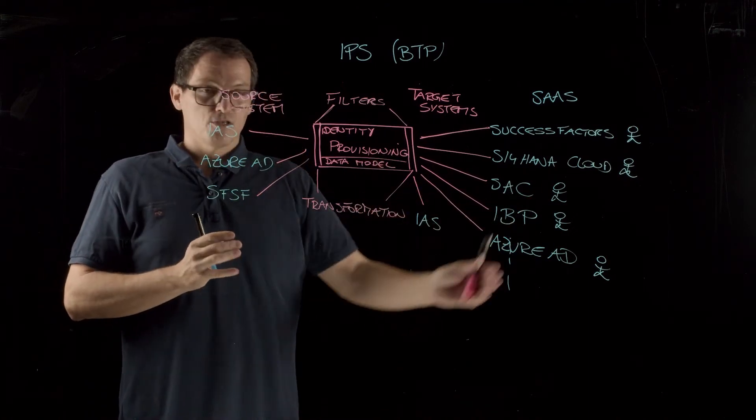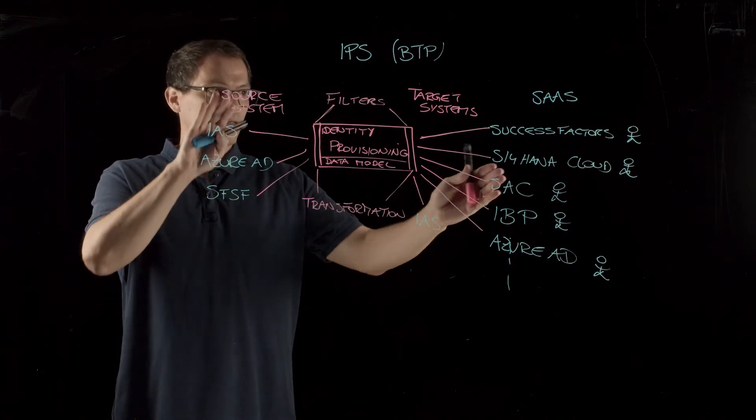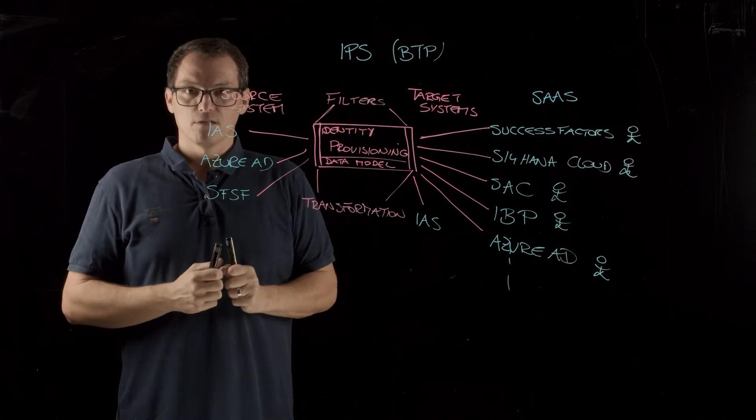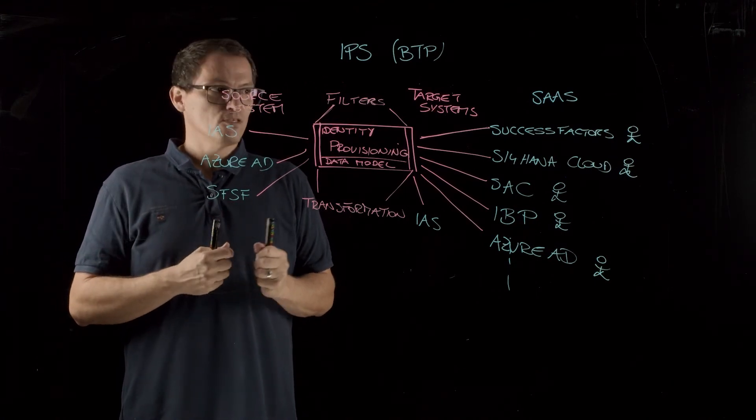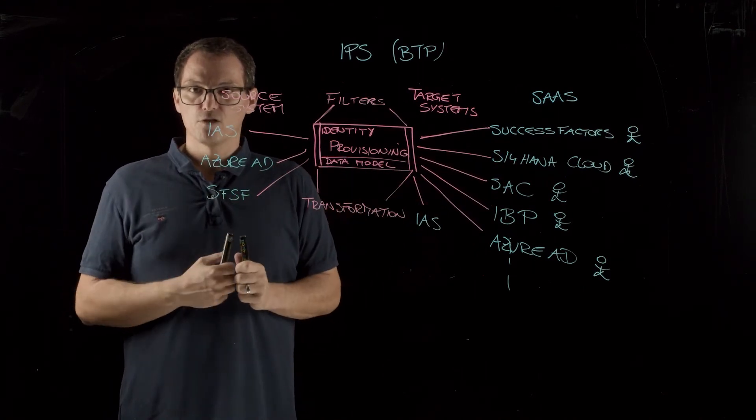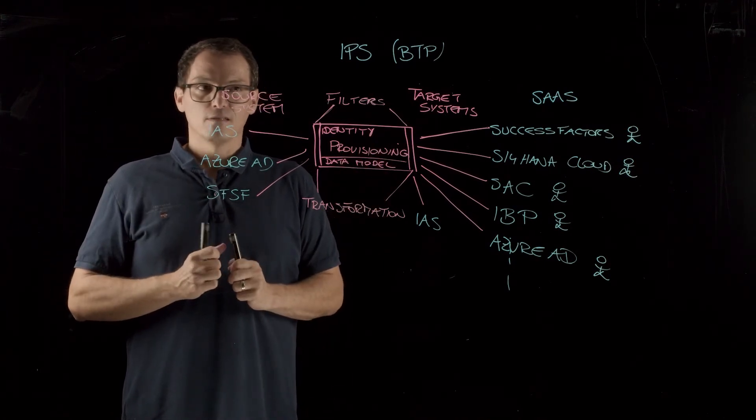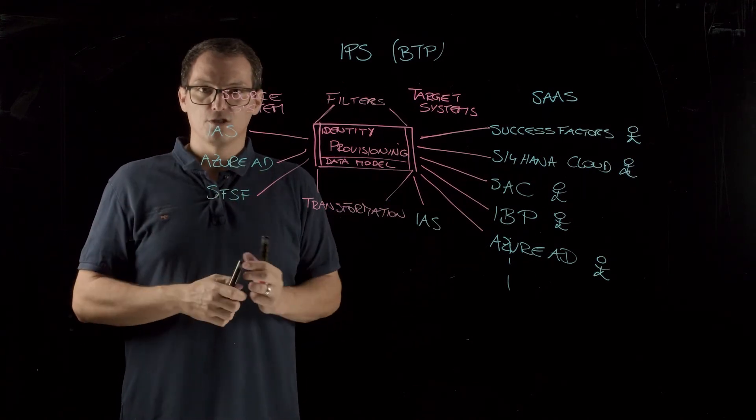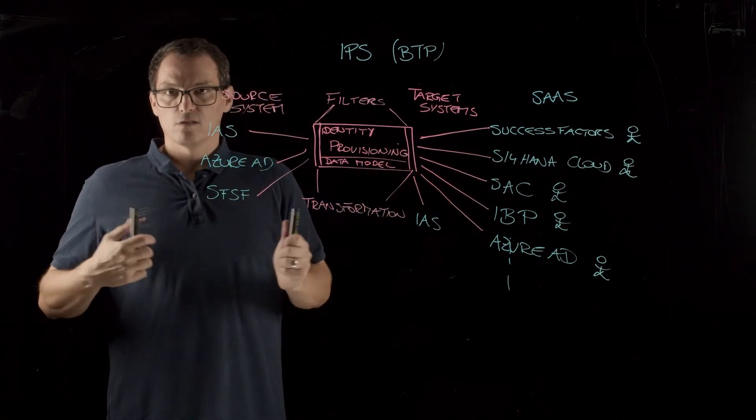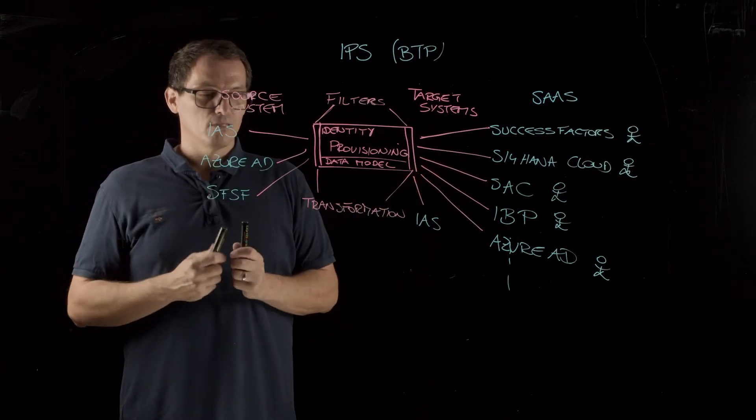There is even more source and target systems available. From a technical point of view, you can combine every system on the source side with the target side. But it's a license topic. So it depends on your license, on your bundle that you've purchased, which combinations you're allowed to use or which source and target systems are officially supported by your bundle. If you have the biggest bundle, which is the identity access governance bundle, you can use any combination. If you have SuccessFactors bundle, you have a limited number of source and target systems. So it depends on your license, which combinations are supported.